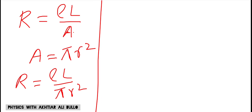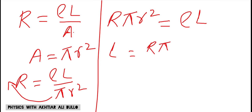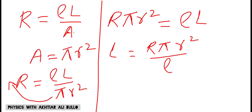So the formula becomes R = ρL/(πr²). We have to calculate length, so πr² will move to the other side and multiply with resistance, giving R × πr² = ρL. Therefore, L = R × πr² / ρ.